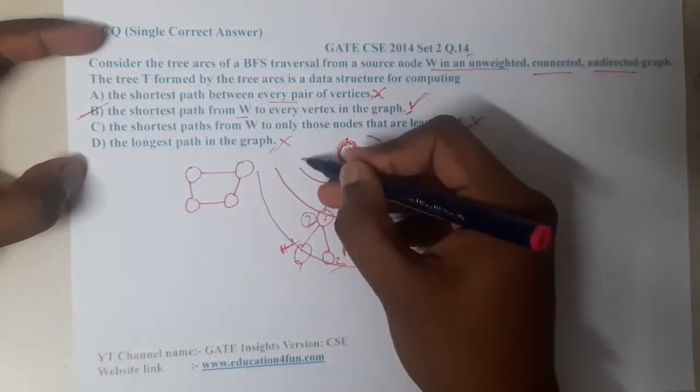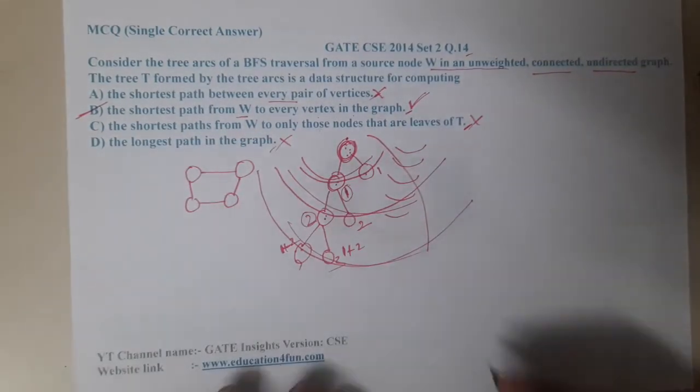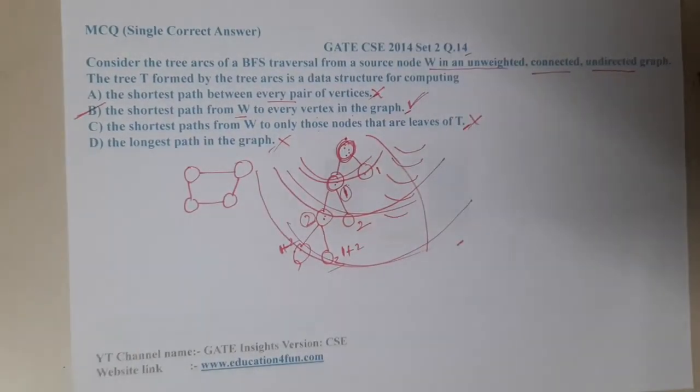Now you got an idea, right? The arc layers are just counting the distance between that node to that node. So now I hope everyone got a clear idea on this question. In the next lecture let us continue with the next question.